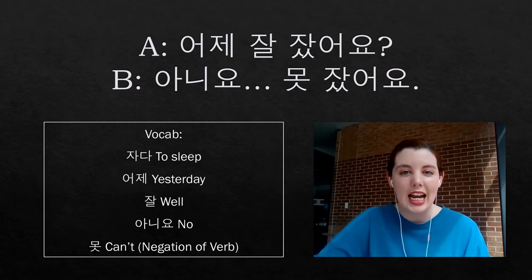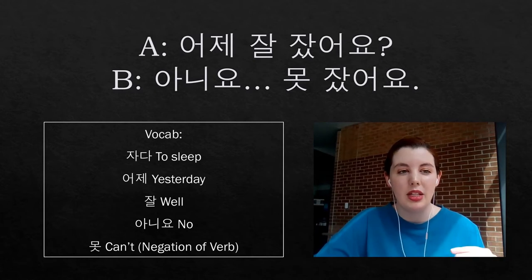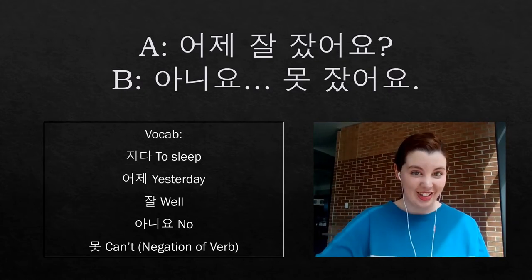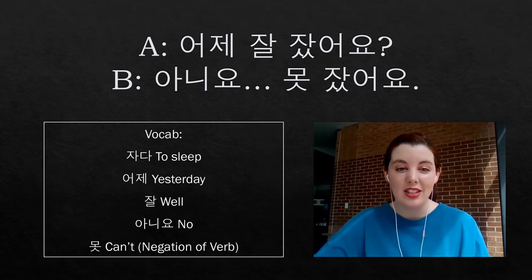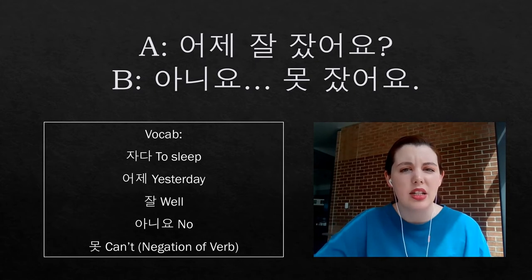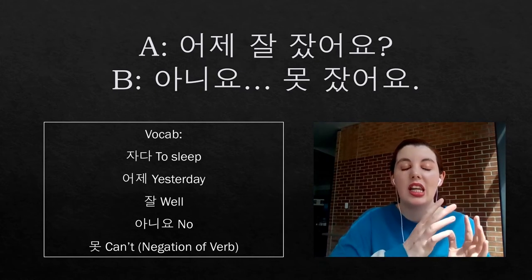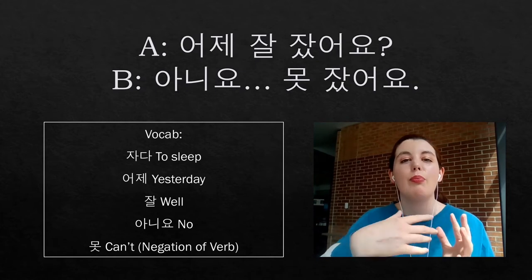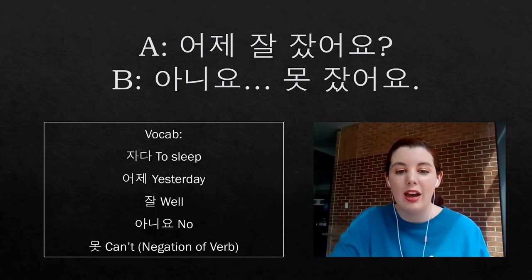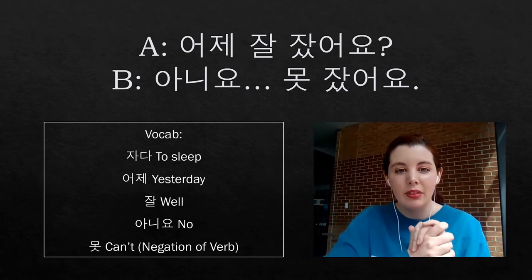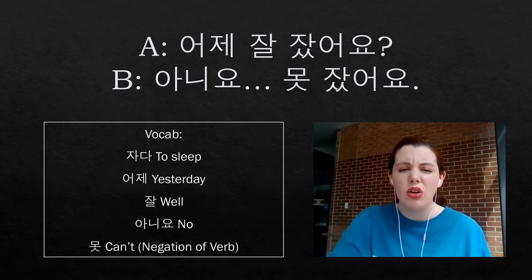어제 means yesterday. 잘 means well — if you place it in front of a verb, it means 'did you do that verb well?' 잤어요 comes from 자다, meaning to sleep, so 어제 잘 잤어요? means 'Did you sleep well yesterday?' Person B says: 아니요, 못 잤어요. 아니요 means no, and 못 means can't — it shows a lack of ability to do the verb. So: 'No, I couldn't sleep well.'